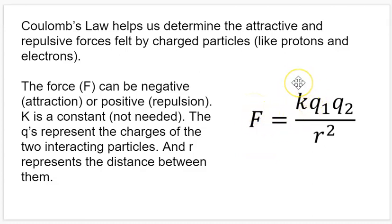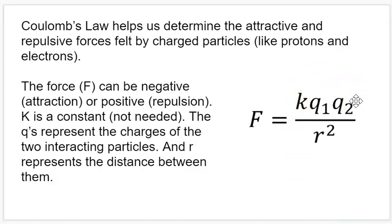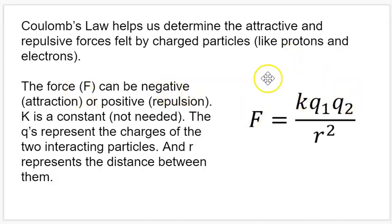We have a constant K, which we don't need to worry about. We're not actually going to be using this equation to solve any math problems — more, we're using this to look at the relationships between the variables. Q1 and Q2 represent the charges of the two particles that we're focusing on. Like charged particles are going to repel and unlike charged particles are going to attract. A positive times a negative gives us a negative, which is a force of attraction, versus two positives or two negatives, which gives us a positive force, which is a force of repulsion.